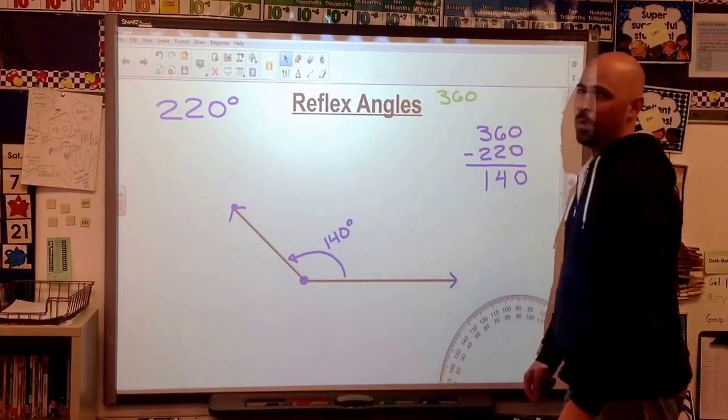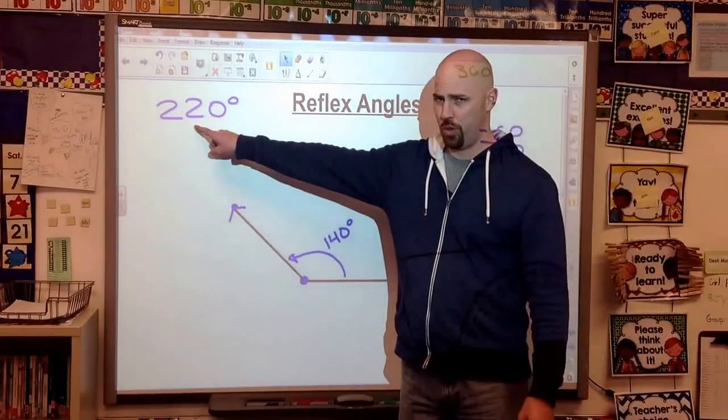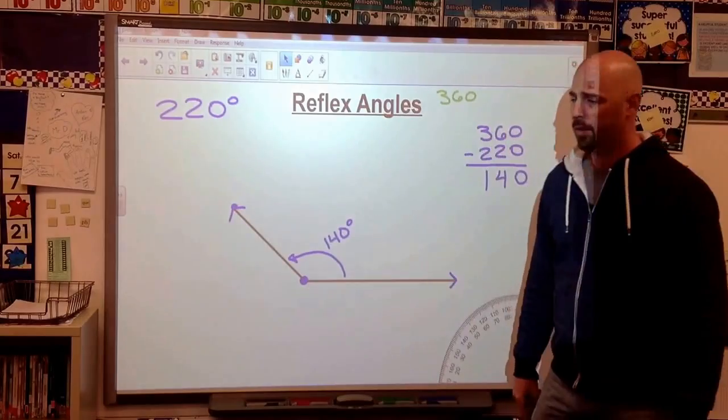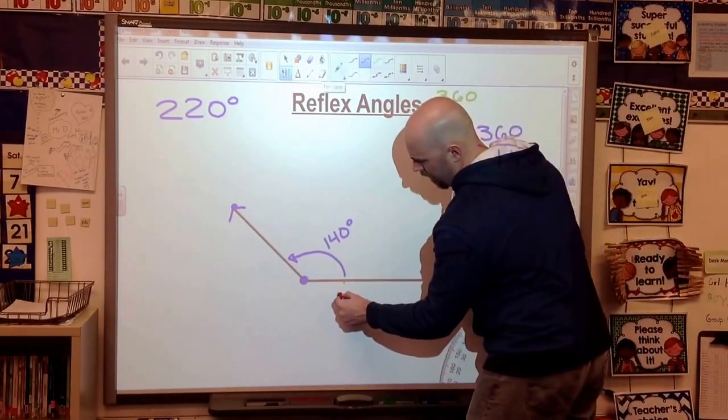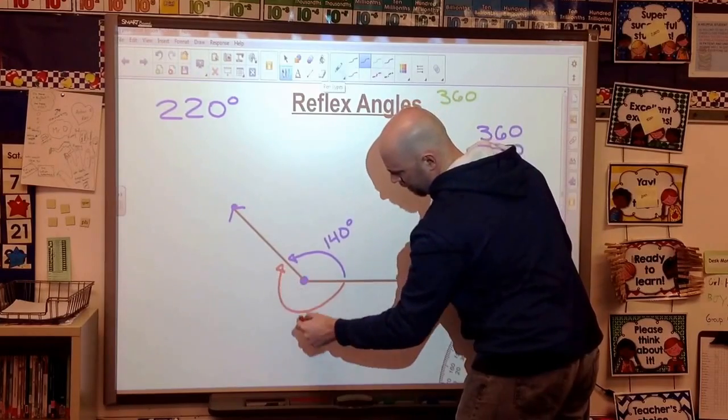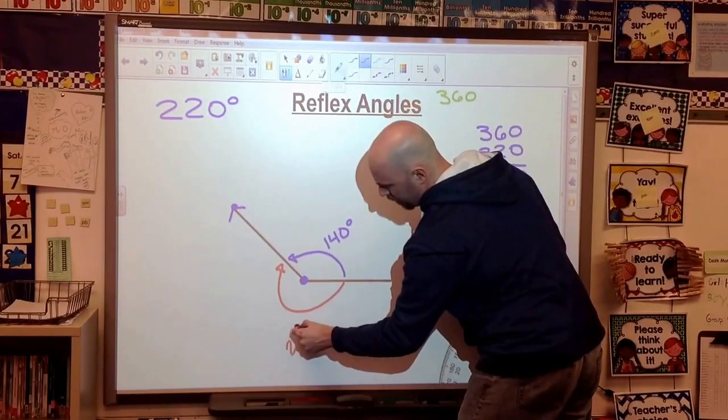But that wasn't what we wanted to create. We wanted to create a 220 degree angle. Well, that's just going to be the other side of my angle. If I wrap this around, my red line is going to be 220 degrees.